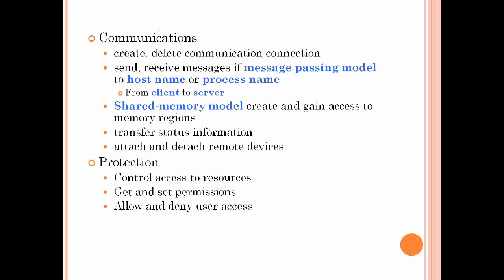The next category is communication. Here there is process P1 and process P2. Two processes create a communication link. You can create communication and also delete communication. Then there is message passing between P1 and P2.